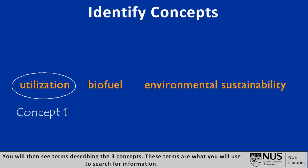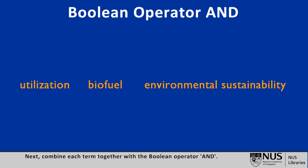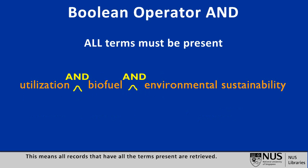You will then see terms describing the three concepts. These terms are what you will use to search for information. Next, combine each term together with the Boolean operator AND. This means all records that have all the terms present are retrieved.